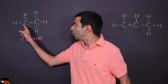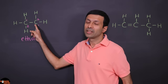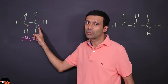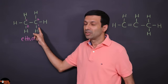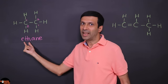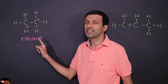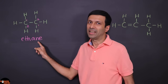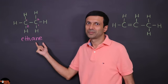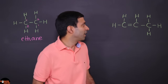So what did we do? Look for the longest continuous carbon chain, number it forward then backwards, and find the name based on it. It was eth and since there are only single bonds it's an alkane, so it's ethane.